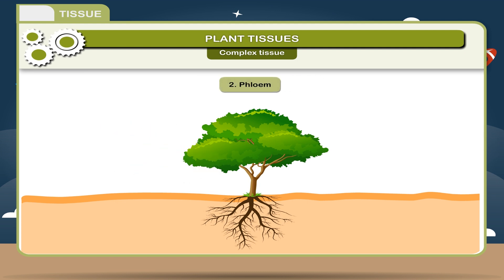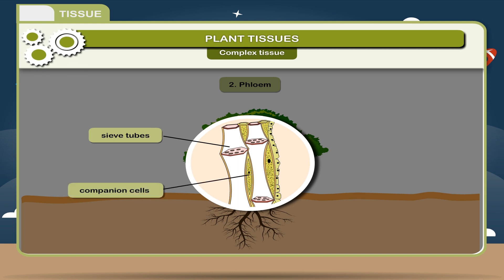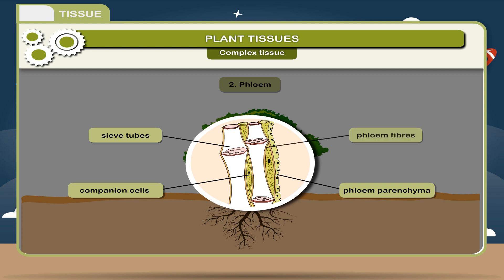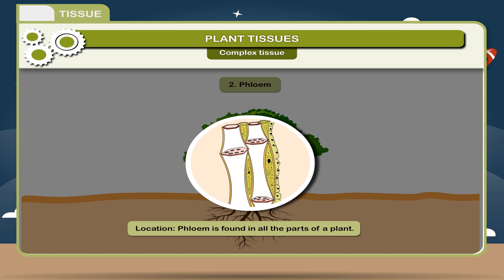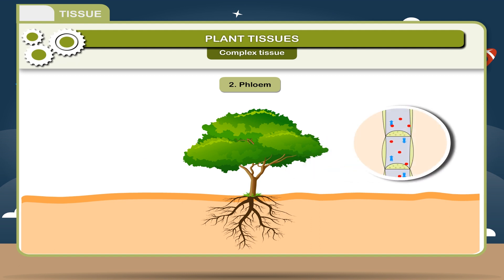2. Phloem. These are thin-walled tubular cells made up of sieve tubes. Phloem is found in all parts of a plant. Function: phloem helps in the transportation of prepared food from the leaf to the other parts of the plant.